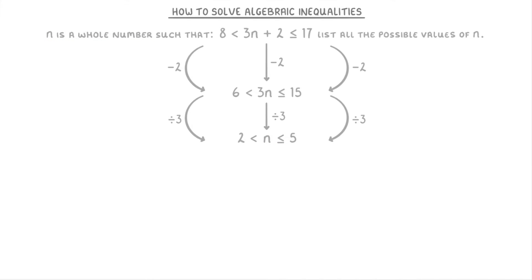If it helps, you can draw this out on a number line where we put little circles above the 2 and the 5, and then join them up with a line to show that n has to be somewhere in this region. Importantly though, n has to be more than 2, it can't be 2 itself, so we leave this circle above the 2 blank. Whereas because n is less than or equal to 5, it can be 5 itself, which means we fill in this circle above the 5. So the possible values of n are 3, 4, and 5.